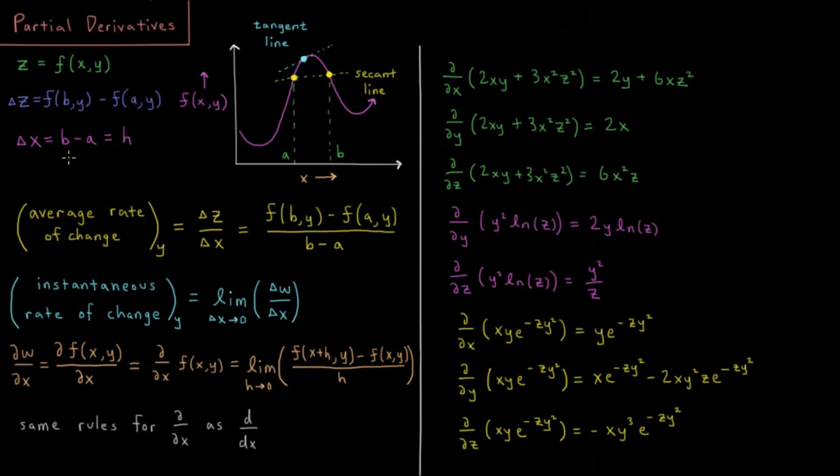That allows us to compute an average rate of change. The average rate of change while holding y constant—sometimes in partial derivatives you see lower right subscripts of things being held constant during that computation—over the region from a to b would be delta z over delta x, which gives us f of b,y minus f of a,y divided by b minus a.